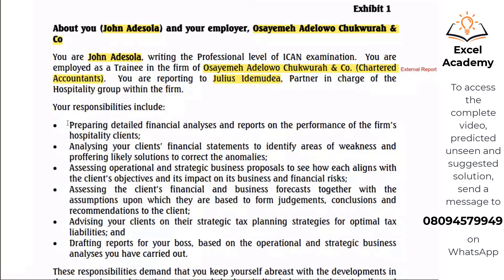Your responsibilities here include preparing detailed financial analysis. But one of these responsibilities stands out — it's more or less a new addition to the list of responsibilities the examiner has always been including. In that regard, this would be part of your requirement. You will be receiving the predicted unseen and everything will be there for you to read, but there is a guideline to the requirements. Requirement five would be part of your requirement — don't miss it. This is an additional responsibility and it is a first possibility that it would be part of your requirement.